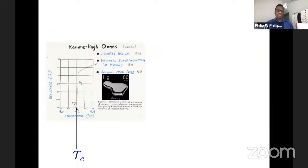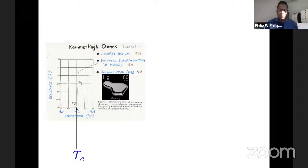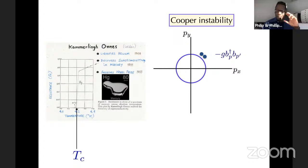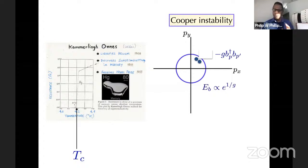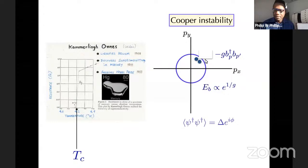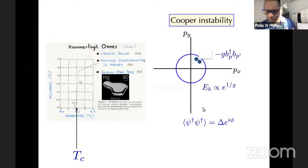Superconductivity is a very old problem — it started back in 1911, and the resistivity goes to zero. The first inkling as to what might be going on is the Cooper instability. This starts with a Fermi surface — a collection of electrons which are essentially free. Cooper turned on an attractive interaction between two electrons outside the Fermi surface, and found this situation is unstable: they want to condense into a pair below the Fermi surface. What this is ultimately telling you is there's some sort of essential singularity — a condensate that wants to form with a well-defined amplitude and a phase.